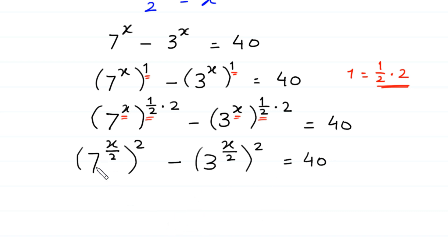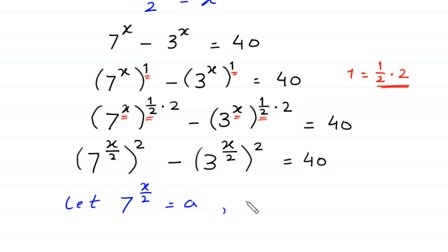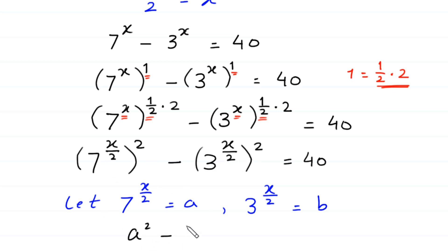We now introduce a second substitution. Let 7 to the power x over 2 equal a, and 3 to the power x over 2 equal b. Substituting these values into the equation, it becomes a squared minus b squared is equal to 40.